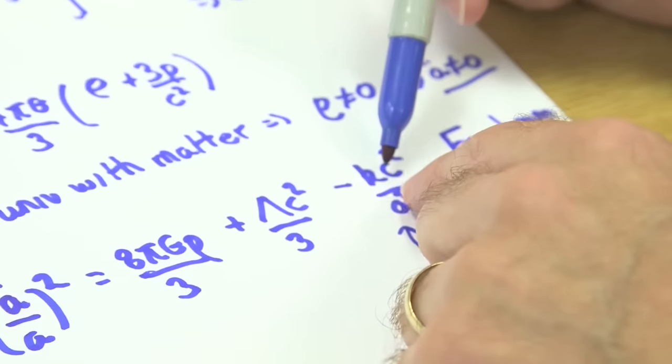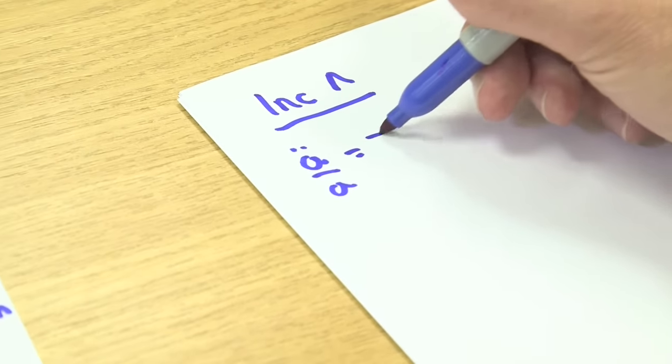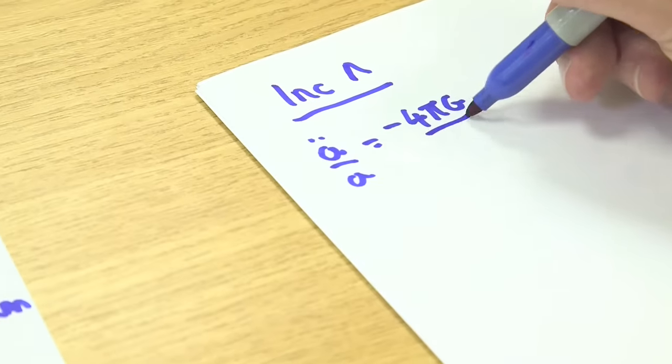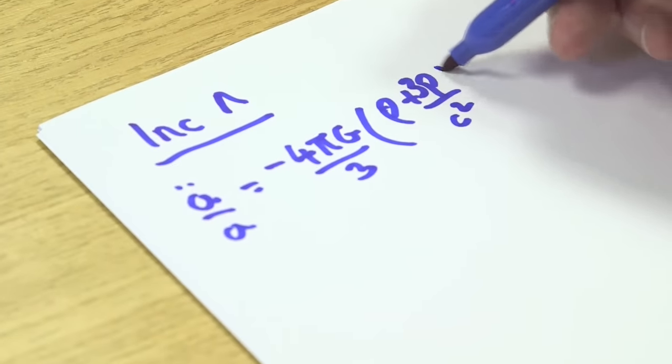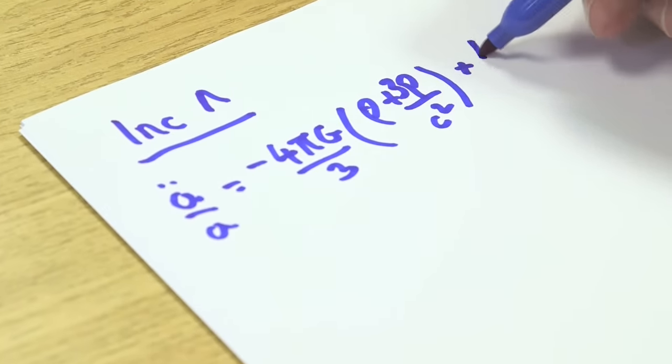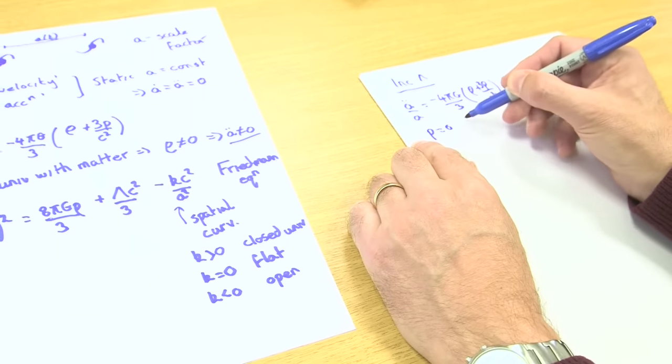The k term doesn't appear in the acceleration equation, but including the lambda term, the acceleration equation now becomes what it was before: minus 4 pi g over 3 times rho plus 3p over c squared, and then this lambda term appears. Remember what Albert wanted - he wanted a dot and a double dot to be zero. So I just set the left hand side of this equation and this equation to be zero.